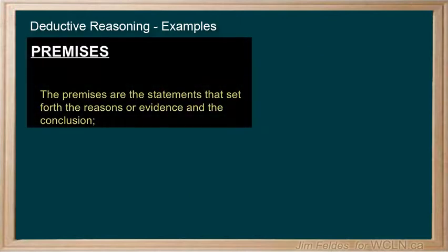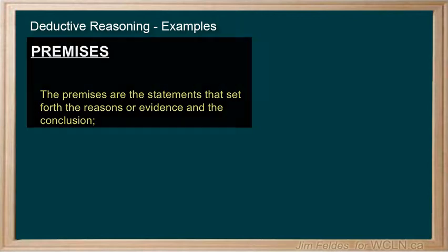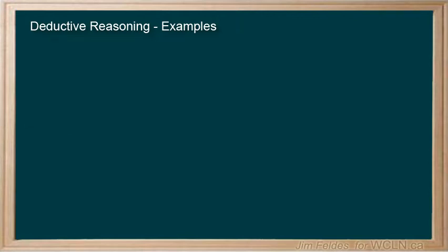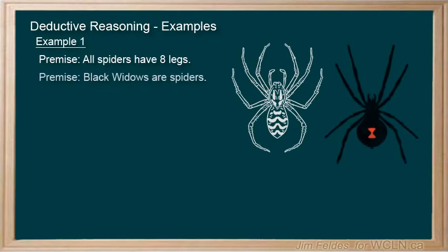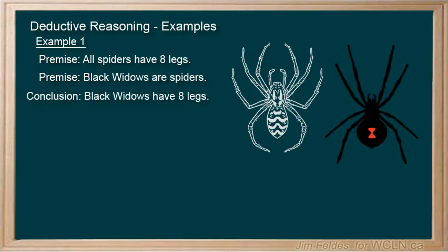The statements we make when reasoning are often referred to as premises. In deductive reasoning, the assumption is made that because the premises are true, so is our concluding statement. Here's an example. All spiders have eight legs. Black widows are spiders. Black widows have eight legs.